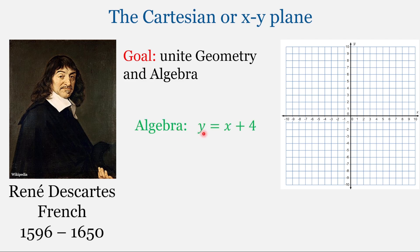One of his goals was to unite geometry and algebra. Now in algebra, we have nice equations like y equals x plus 4, and you're going to be seeing a lot of equations like this. And this equation represents a line, a line that looks like this. So geometry is a great way to visualize algebraic equations and algebra is a great way to manipulate the graphs we see in geometry.